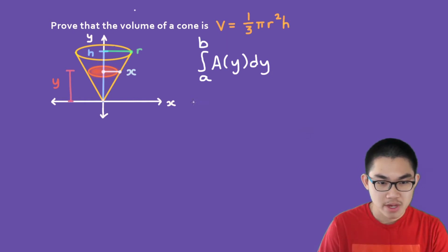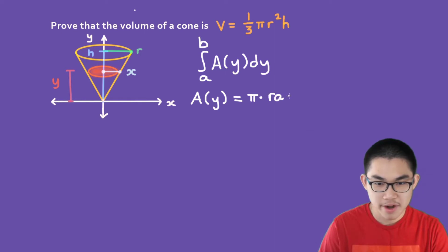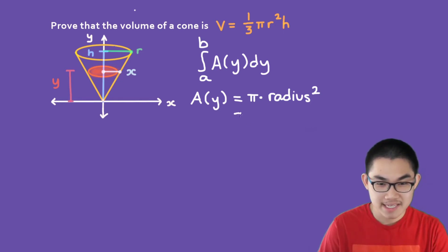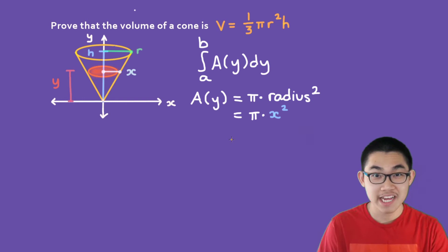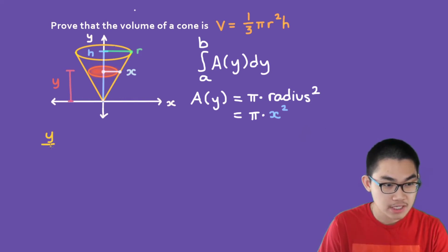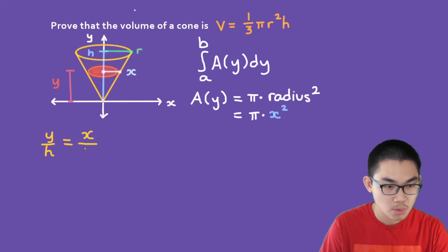The first thing we're going to do is find the area of that cross section. The area of a circle is π times the radius squared. The radius of this cross section is x, so we replace the radius with x, giving A = πx². Since we are integrating with respect to y, we need to rewrite x in terms of y. We use a proportional ratio: y/h equals x/r, where y over h is the cross-section height over the total cone height.